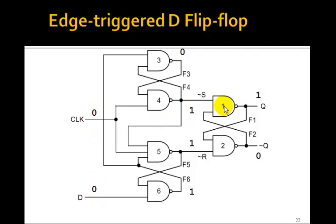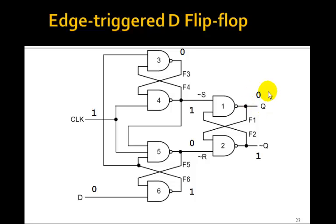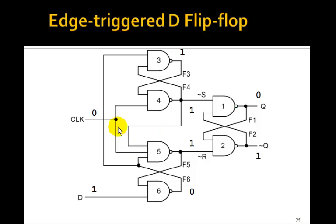D went to 0 and the clock went to 0, but Q still stayed 1. Now D is 0. When the clock goes high again, we have 1,1,1 here, so NOT-R goes to 0 — but NOT-R is the reset, so Q goes to 0 and NOT-Q goes to 1. On the rising edge of the clock, this 0 goes to Q. If D then goes to 1, since Q is 0, nothing changes. When the clock goes back to 0, we stay reset to 0. So Q only changes on the rising edge of the clock.